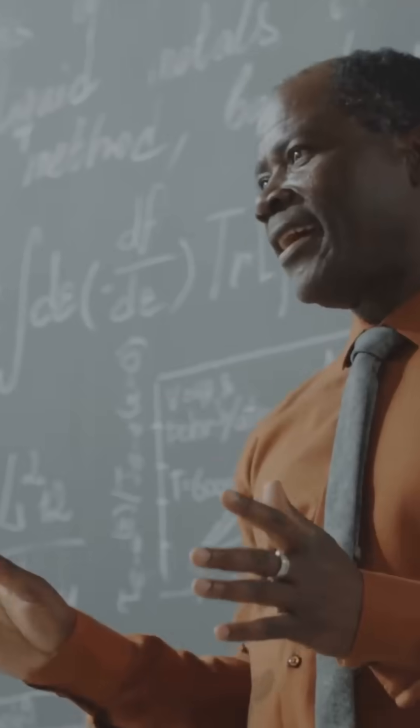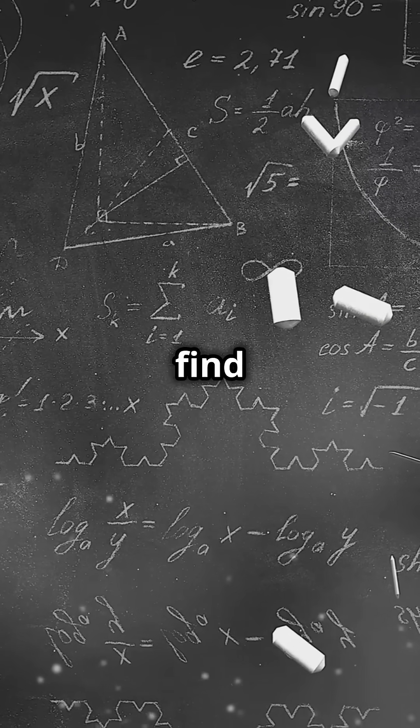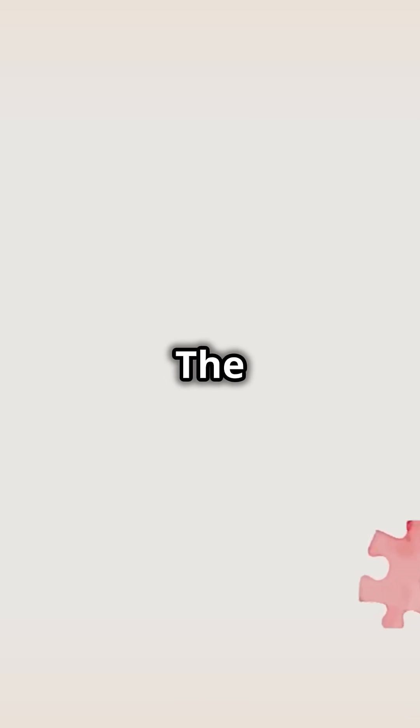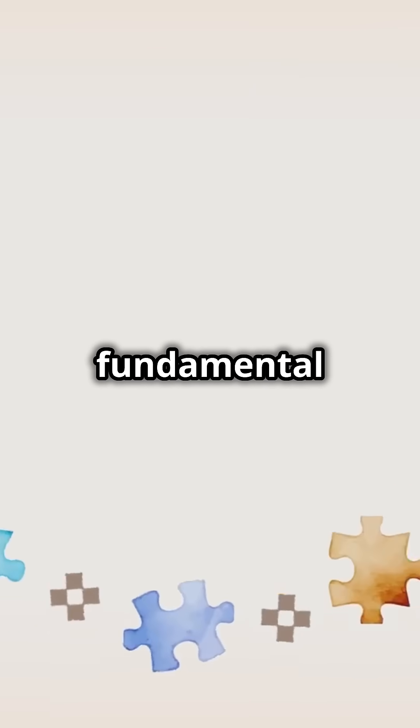Sounds complex? Well, it kind of is, but here's the gist. Imagine trying to find a hidden pattern in a sea of mathematical shapes. The Hodge Conjecture suggests that every shape we see can be built from simpler, fundamental pieces.